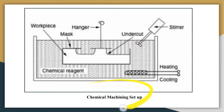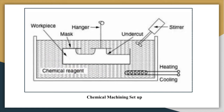In chemical machining, there is no use of electrical energy. We have a tool and a work piece placed inside a tank. This tank is filled with what is known as an etchant, which is a chemical reagent. There is a chemical reaction between the work piece and the etchant, and through this action, material removal happens.